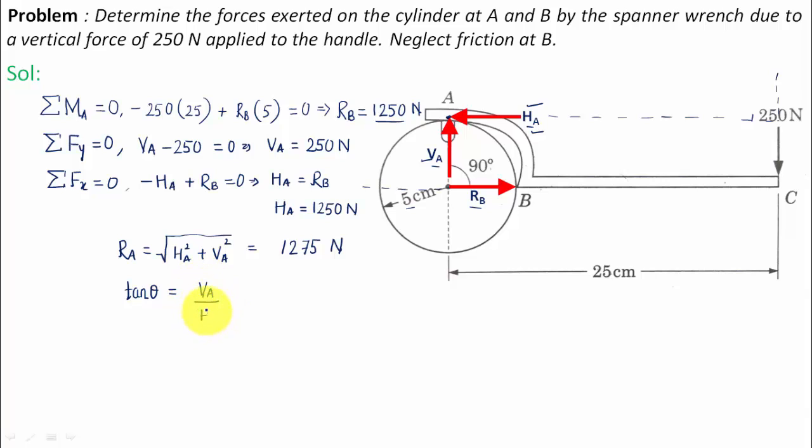When you put VA equals 250 and HA equals 1250, you get tan theta equals 0.2. When you do inverse tan of 0.2, the value of theta equals 11.3 degrees.